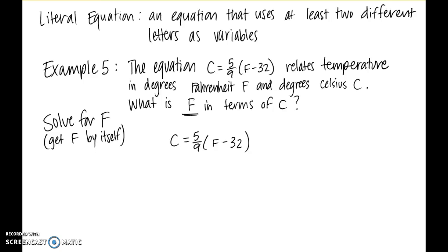In order to get F by itself, there are two different options here. We could distribute the 5/9, but then that would create an extra step. Instead of that, I'm going to multiply both sides by the reciprocal of 5/9, which is 9/5. That will get rid of that fraction. So once we moved the 9/5 over to the other side, we have 9/5 times C equals F minus 32.